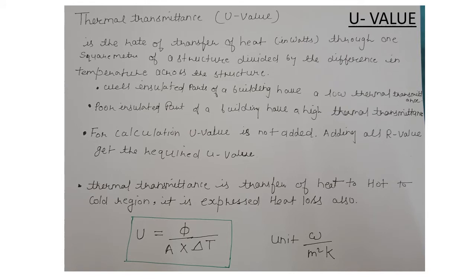U value, or thermal transmittance, is the rate of transfer of heat in watts through one square meter of a structure, divided by the difference in temperature across the structure. U equals heat flow over area times delta T, and the unit is watts per square meter Kelvin. An important point: well-insulated parts of a building have low thermal transmittance, and poorly insulated parts have high thermal transmittance. For calculations, we add R values to get the required U value.